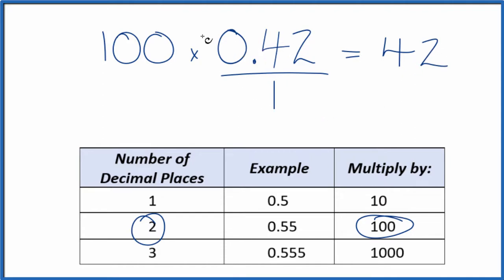But we can't just multiply the numerator. We also have to multiply the denominator by 100. Because 100 divided by 100 is just 1, we haven't changed the value, just the way it's represented.